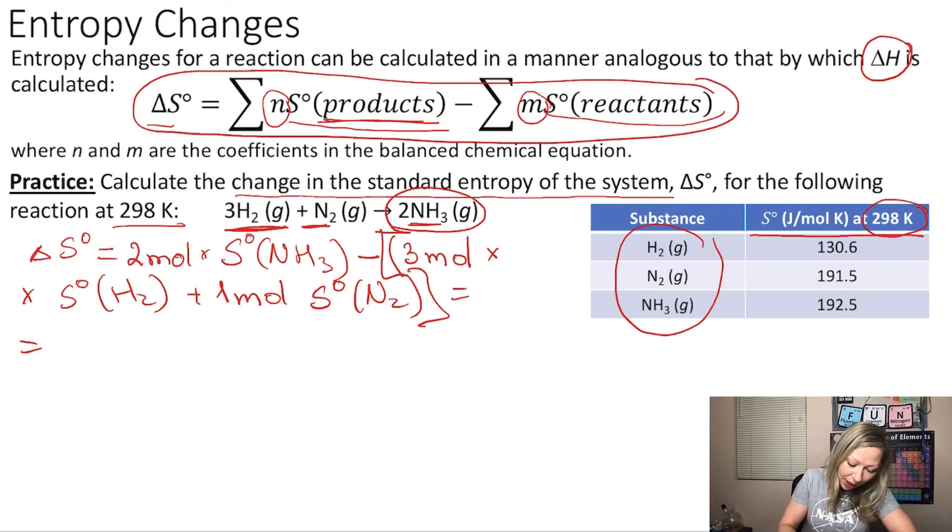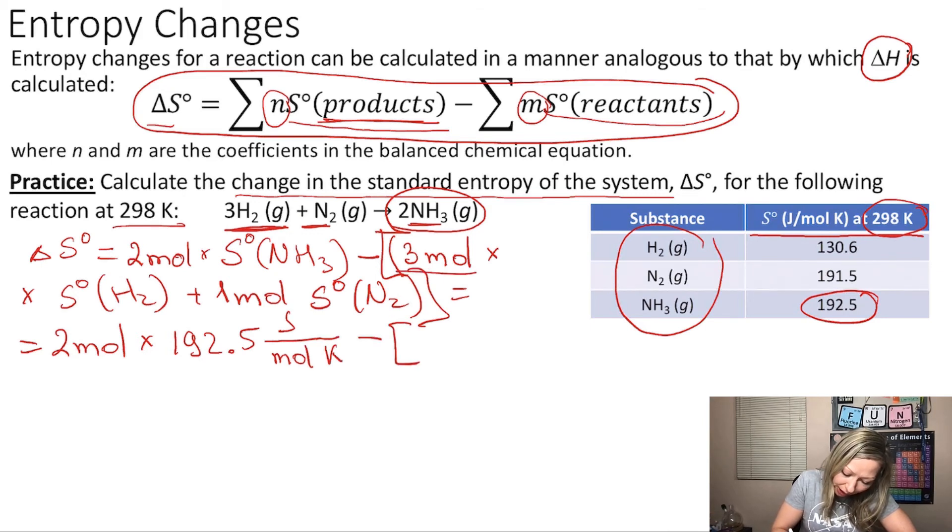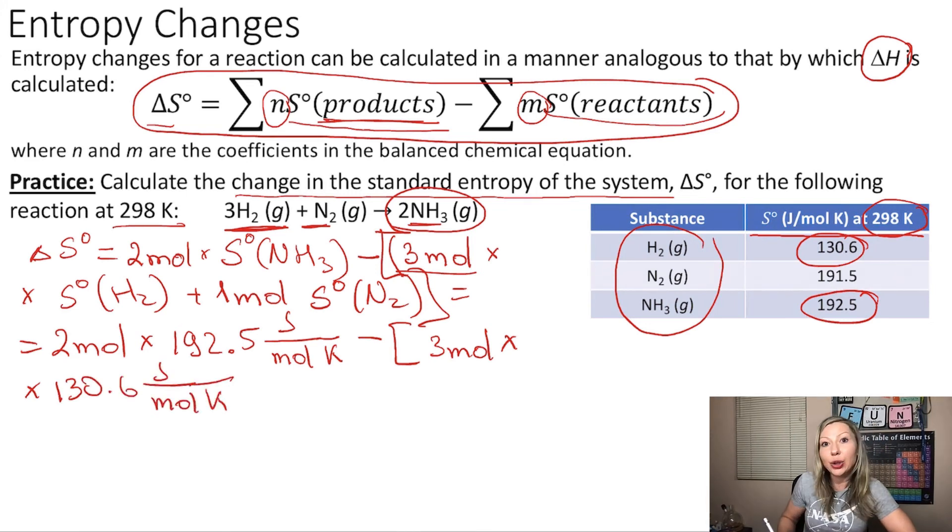Let's plug in the values. So we have 2 moles multiplied by the standard entropy for ammonia, which is 192.5 joule per mole Kelvin, minus 3 moles multiplied by 130.6 joule per mole Kelvin, that is the standard entropy for H2.